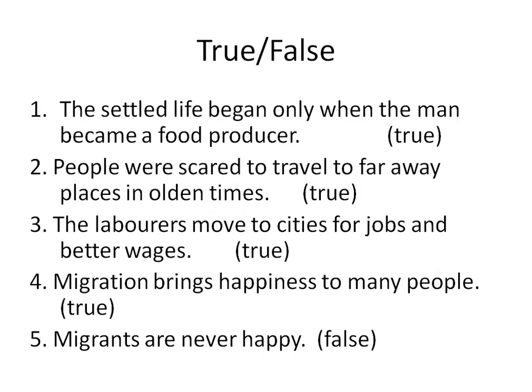Now the third part is true-false. Number 1: the settled life began only when the man became a food producer — true. Number 2: people were scared to travel to far away places in olden times — also true. Number 3: the laborers moved to cities for jobs and better wages — also true.